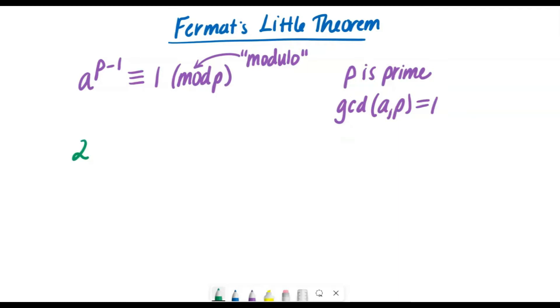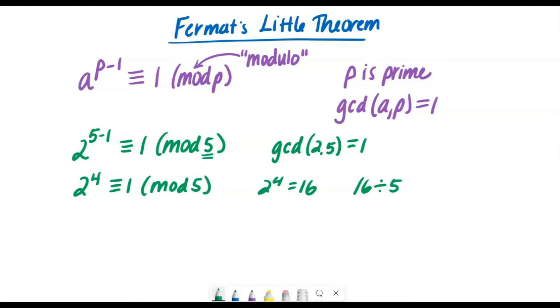So one example is that two to the power of five minus one must be congruent to one in mod five. And this does work because p, which here is five, is prime and the greatest common divisor between two and five is equal to one. And we can see here then that two to the power of four must be congruent to one in mod five. And it sure is because two to the fourth is equal to the number 16. And when we divide 16 by five, we get three with a remainder of one, which is what Fermat's Little Theorem will tell us.